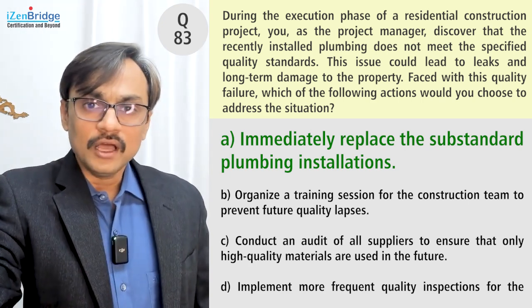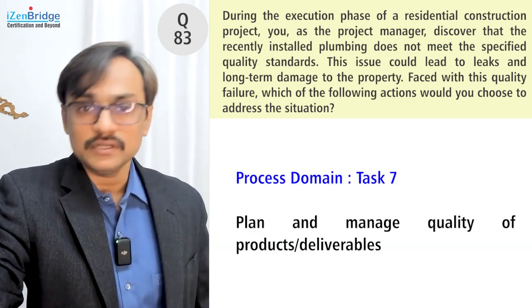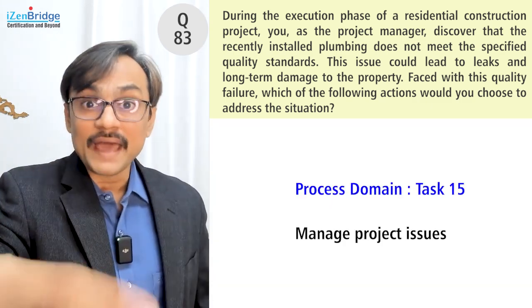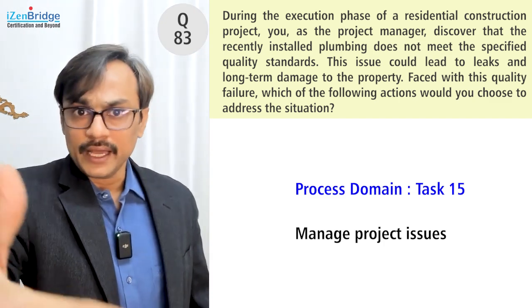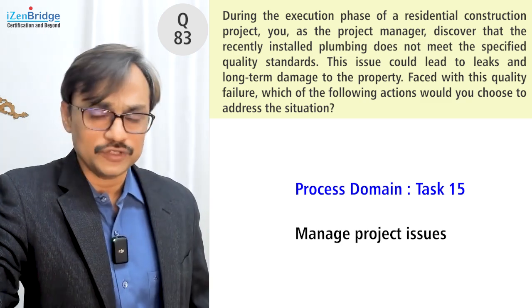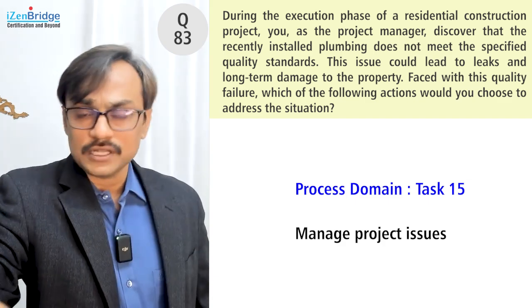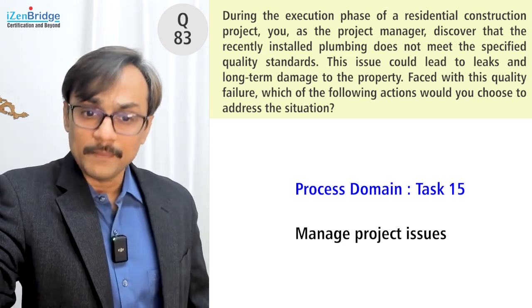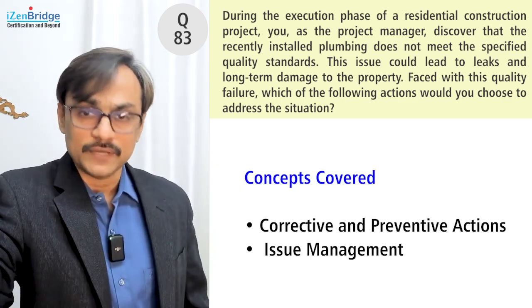Now, where does this map to our process and tasks? This is definitely mapping to Task 7 in our process group, talking about plan and manage quality of product and deliverables. It also maps to managing project issues — you need to acknowledge, analyze, prioritize, and resolve the issue as per the priority and satisfaction level needed for our stakeholders. Later on, we need to do a lessons-learned analysis and a detailed root cause analysis so we can take preventive actions — but that is the future path.